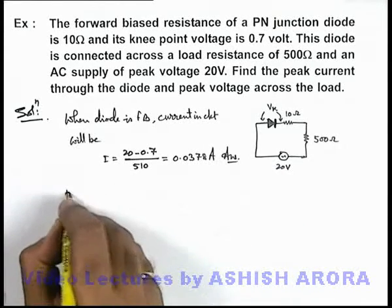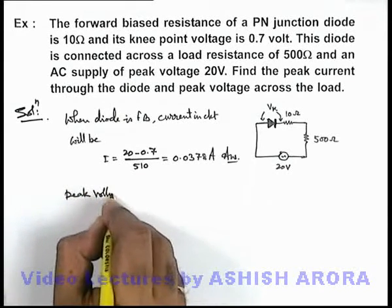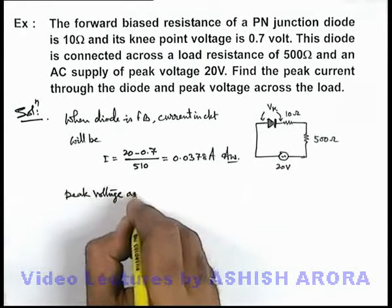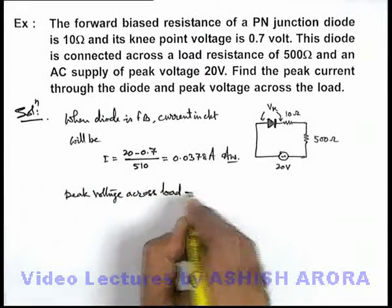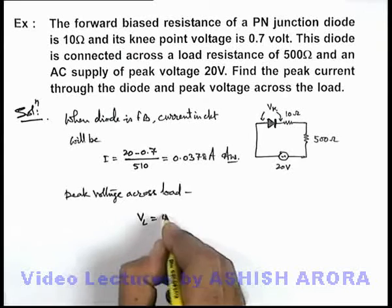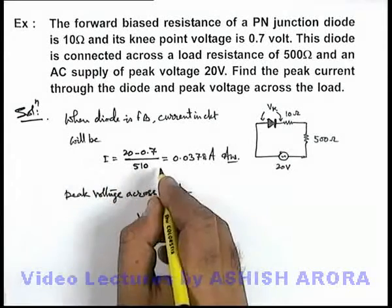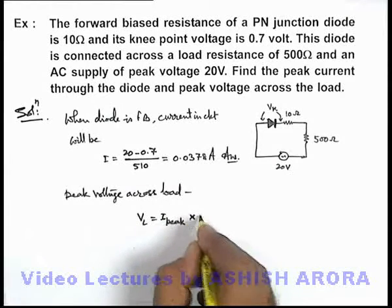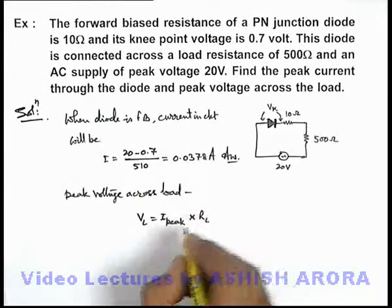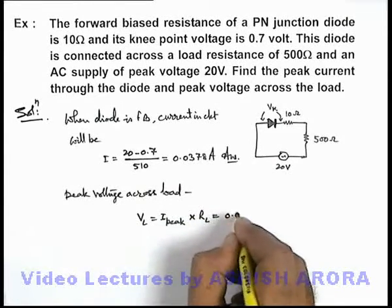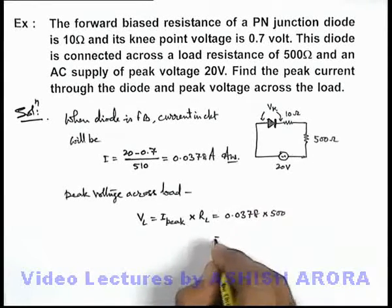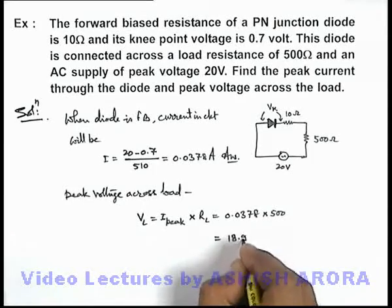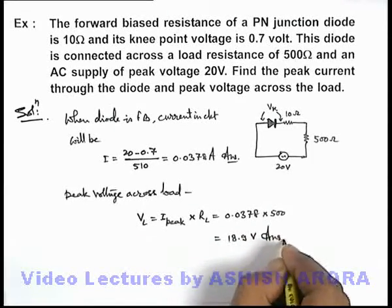Similarly, if we calculate the peak voltage across the load, it can be directly given as the voltage across the load equals I_peak, which we have just calculated, multiplied by the load resistance. So this will be 0.0378 multiplied by 500 ohms. On calculation, this gives us 18.9 volts, which is the answer to this problem.